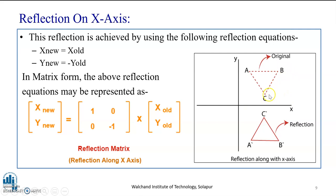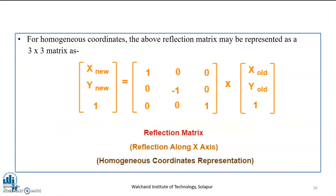When the object is reflected along the x-axis, the x-coordinates remain the same whereas the y-coordinates fall on the negative side of the y-axis. In matrix form, this reflection equation is represented as: [x-new, y-new] = [1, 0; 0, -1] × [x-old, y-old]. To simplify problem solving, we represent this using homogeneous coordinates as a 3×3 matrix: [x-new, y-new, 1] = [1, 0, 0; 0, -1, 0; 0, 0, 1] × [x-old, y-old, 1].